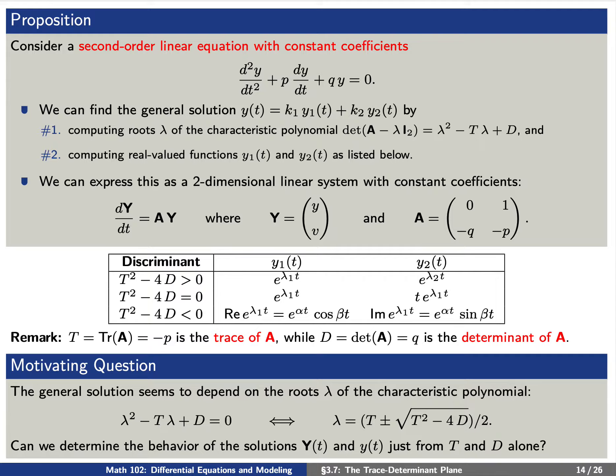Now let's put this together with the following motivating question. The general solution — whether written as lowercase y = k₁y₁ + k₂y₂ or uppercase Y = k₁Y₁ + k₂Y₂ — seems to really depend upon the roots λ of the characteristic polynomial. These roots can be written in terms of T and the square root of T² − 4D. Can we determine the behavior of these solutions just from the parameters T and D alone?